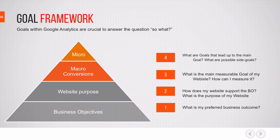Sometimes, like on an online shop, this is very clear — you want the website to generate more sales. But there are also side goals that lead up to a goal or are just not as important as the macro conversion. For example, a newsletter sign-up is the first step to get people into your funnel and later upsell them on a product. The actual sale would be the macro conversion and the newsletter sign-up the micro conversion.